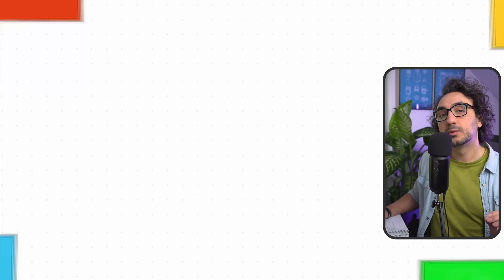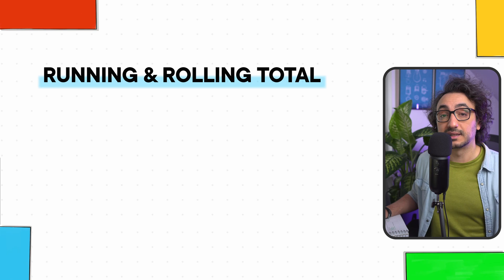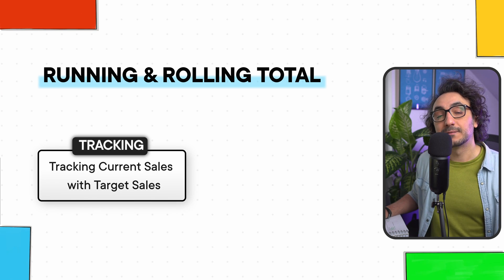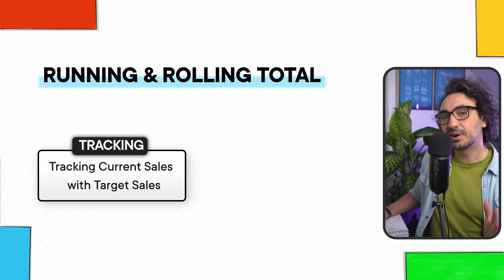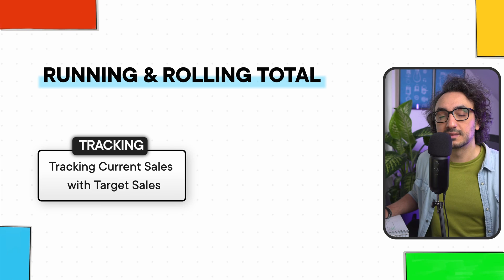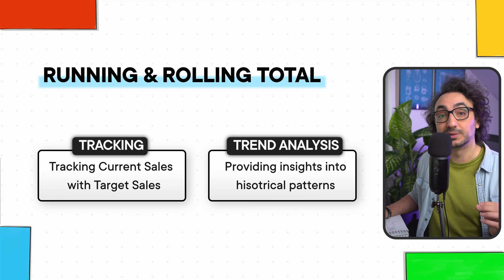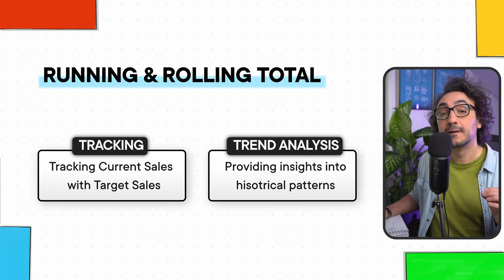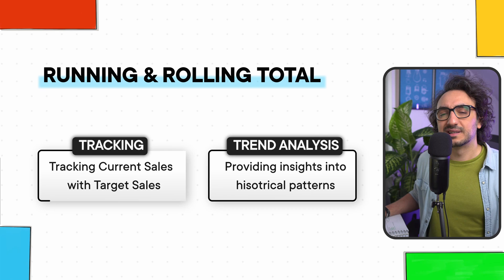All right everyone, so now we're going to focus on a very important use case — one of the must-know use cases for aggregations: running total and rolling total. These two concepts are very important for data analysis and reporting. The key use case for those two concepts is tracking — for example, we can track the current total sales against the target sales in our business, and it's great for historical analysis of trends.